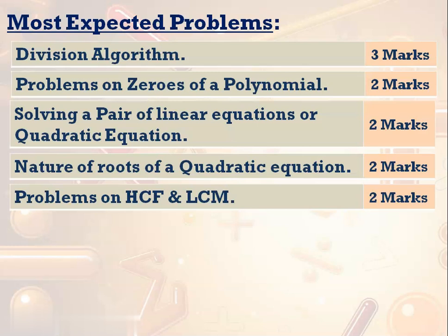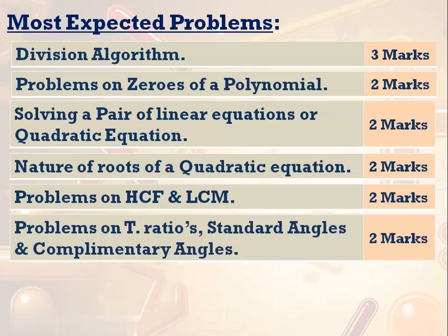Problems on HCF and LCM, and also problems on irrational numbers from real numbers. From trigonometry, just by covering trigonometric ratios, standard angles, and complementary angles, a minimum of 3 marks can be scored. If they give a proving problem it will be for 3 marks. Without identities alone we can score maximum marks — there is only one question from identities, and the remaining questions will be from trigonometric ratios, standard angles, or complementary angles.